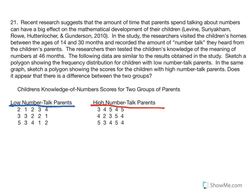Number 21. Recent research suggests that the amount of time parents spend talking about numbers can have a big impact on the mathematical development of their children. In the study, researchers visited children's homes between ages 14 and 30 months and recorded the number talk heard from parents, then tested children's knowledge of number meaning at 46 months.